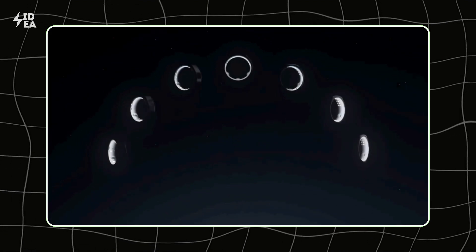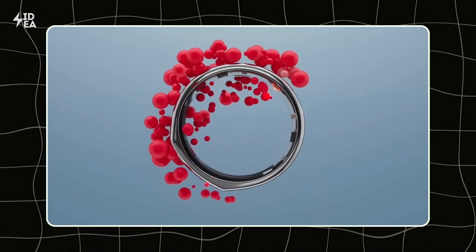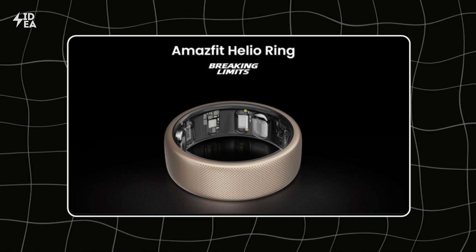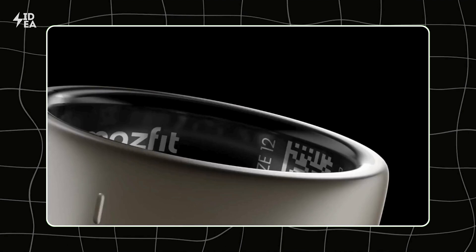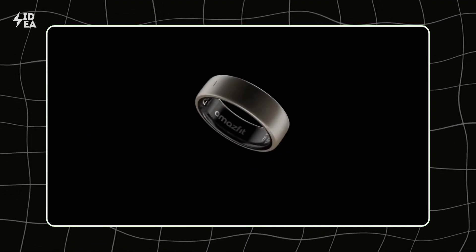Oura also provides a daily readiness score, giving you a daily assessment of your health and readiness for activity. Amazfit Helio, on the other hand, offers a wide array of health metrics and tracks various physical activities, providing detailed insights into your workouts.